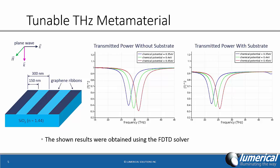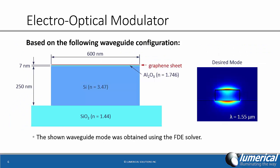The results that you see here for the transmitted power were obtained using FDTD solutions. The second example is an electro-optical modulator based on a graphene waveguide. The mode that you see on the slide was obtained using the finite difference eigenmode solver in mode solutions.